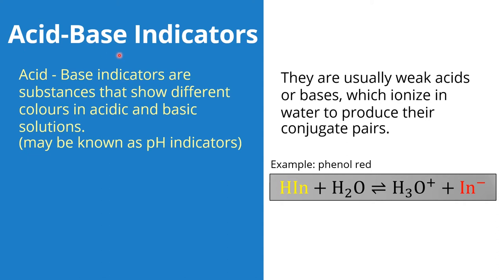So what are acid-base indicators? They are substances that show different colors in acidic and basic solution. This means that in an acidic solution, where pH is lower than 7, the indicator will show one color. If you use the same indicator in a basic solution where pH is higher than 7, it will show another color. This may also be called a pH indicator, because color changes according to pH. Different pH values cause the indicator to show different colors.